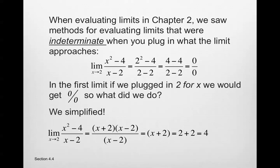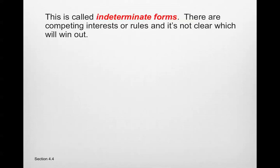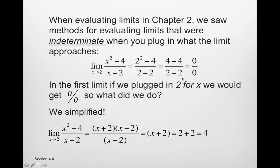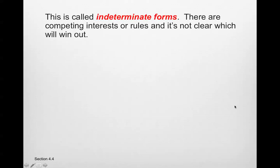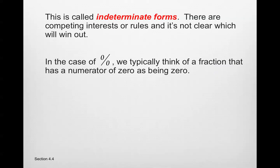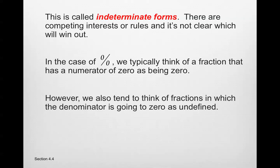Now we're going to learn a new rule to find the limit of such functions when canceling or simplifying is not an option. This is called indeterminate forms — there are competing interests and it's not clear which will win out. Both the numerator and denominator approach 0, so we're not sure which drives the appropriate answer, since that is an indeterminate form.